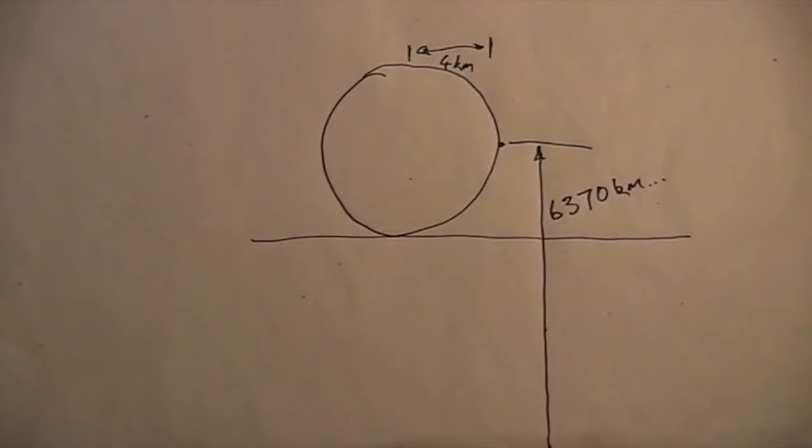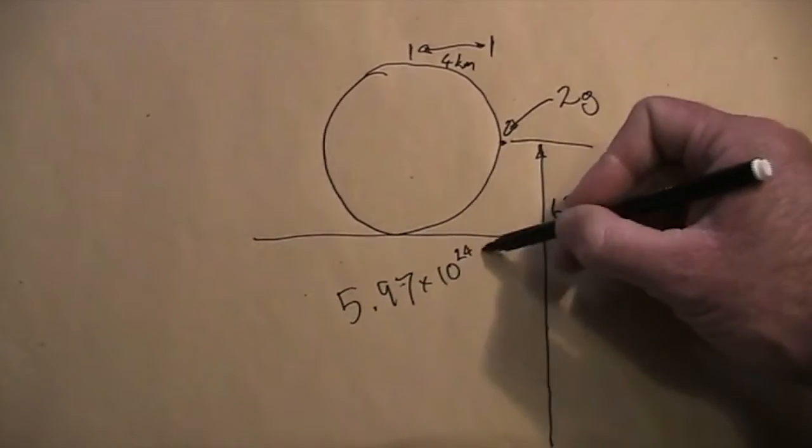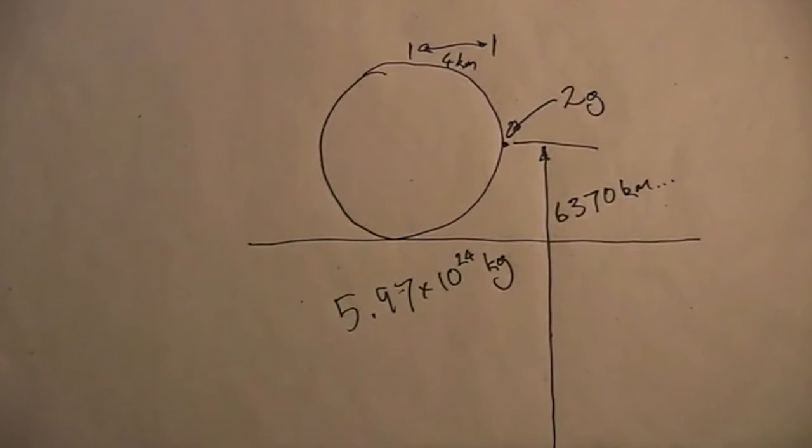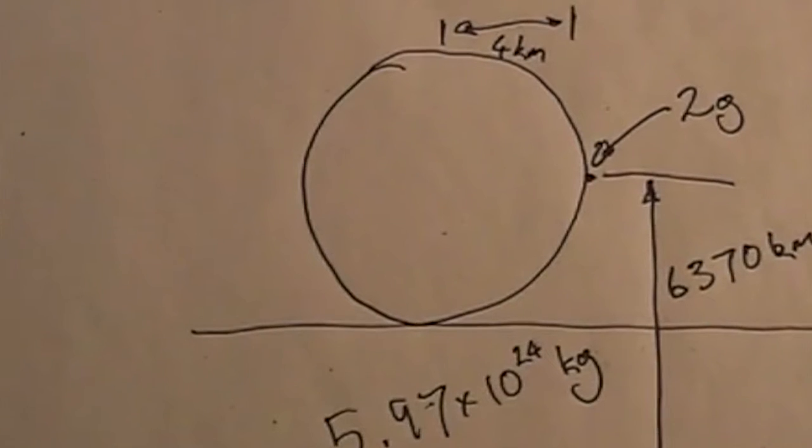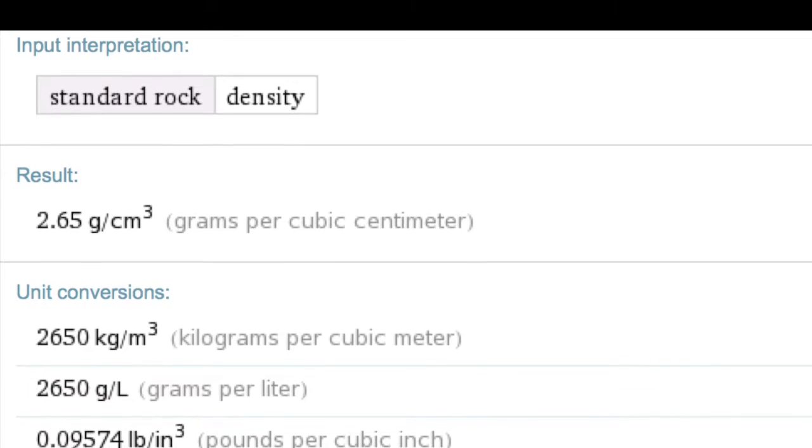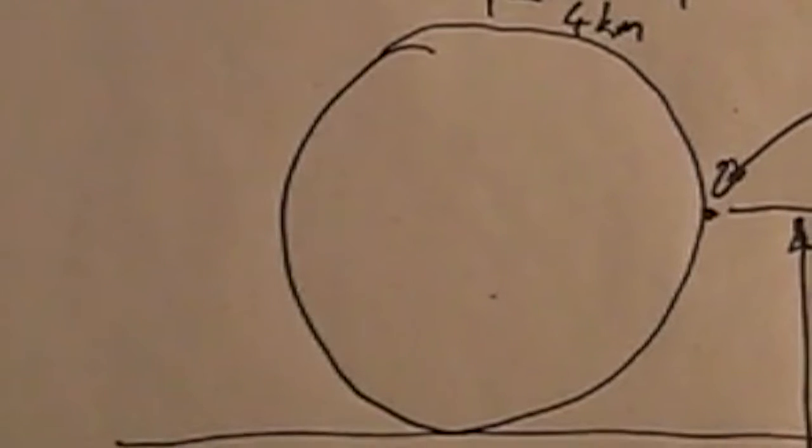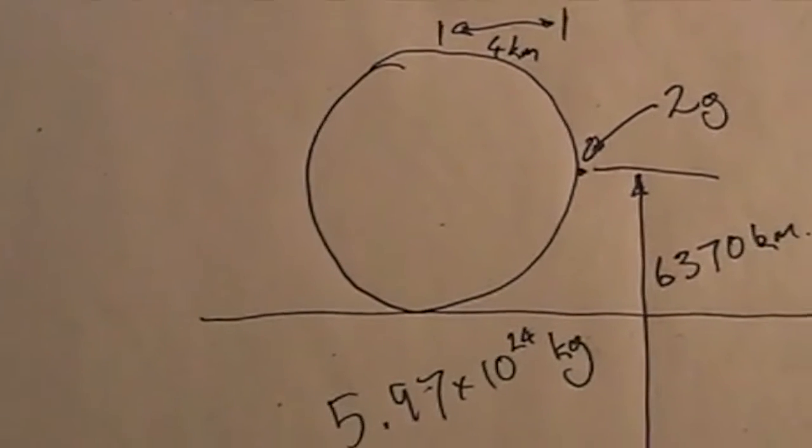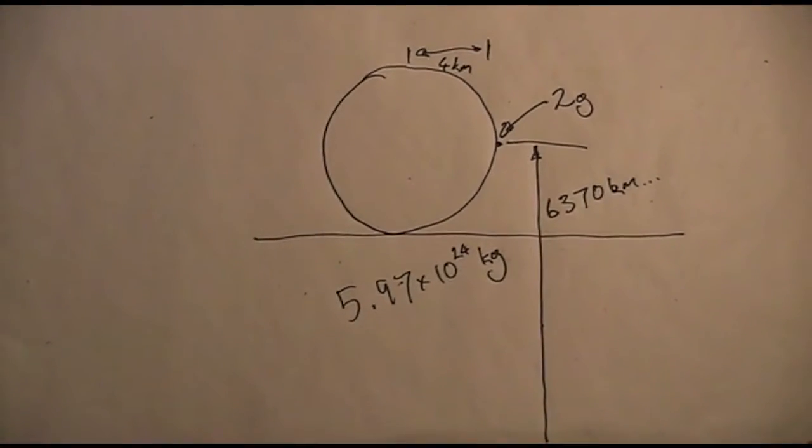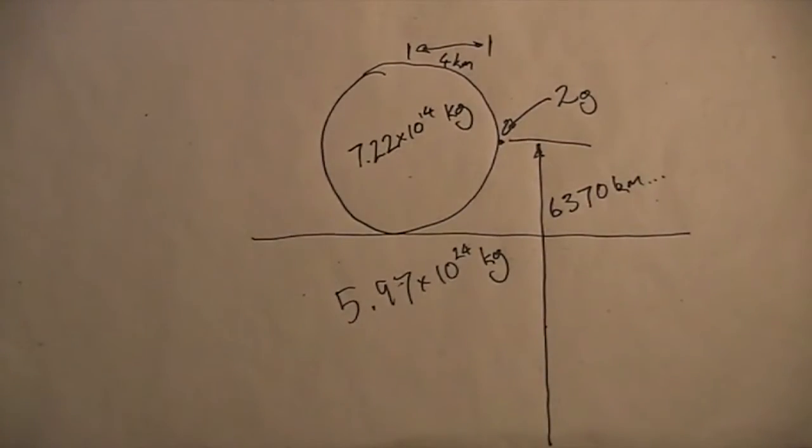Now the masses. Let's assume that the marble is about 2 grams. The Earth is 5.97 by 10 to the 24 kilograms. We'll need to make some assumptions about the rock to figure out its mass. Let's say it's a perfect sphere so we can calculate its volume. The density of rock, according to Wolfram Alpha, is around 2 tonnes per cubic metre. So the overall mass of this giant rock on the surface of the world is the volume multiplied by the density, or around about 7.22 by 10 to the 14 kilograms.